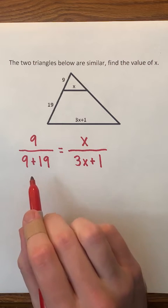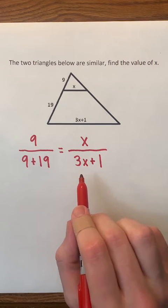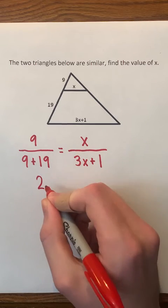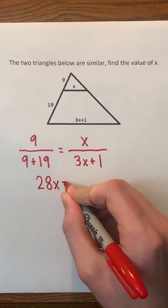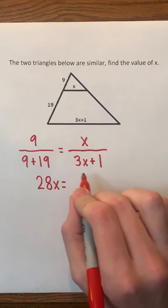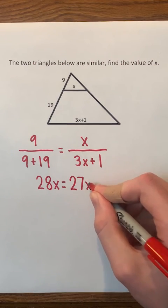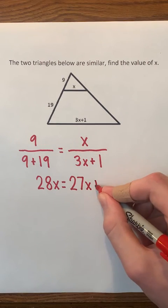Now we're going to begin solving for x by cross multiplying. 9 plus 19 is 28, so 28 times x is 28x. We can set this equal to 9 times 3x plus 1. 9 times 3x is 27x, and 9 times 1 is just 9.